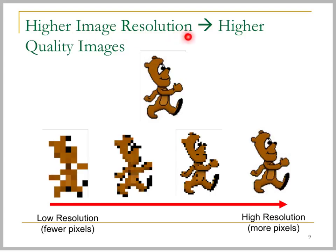The higher the image resolution, the higher quality the image will be. For example, this image has a very low resolution because it has a small number of pixels. By increasing the number of pixels, we can see that we have a higher resolution image on the right-hand side, because it has more pixels in the image.